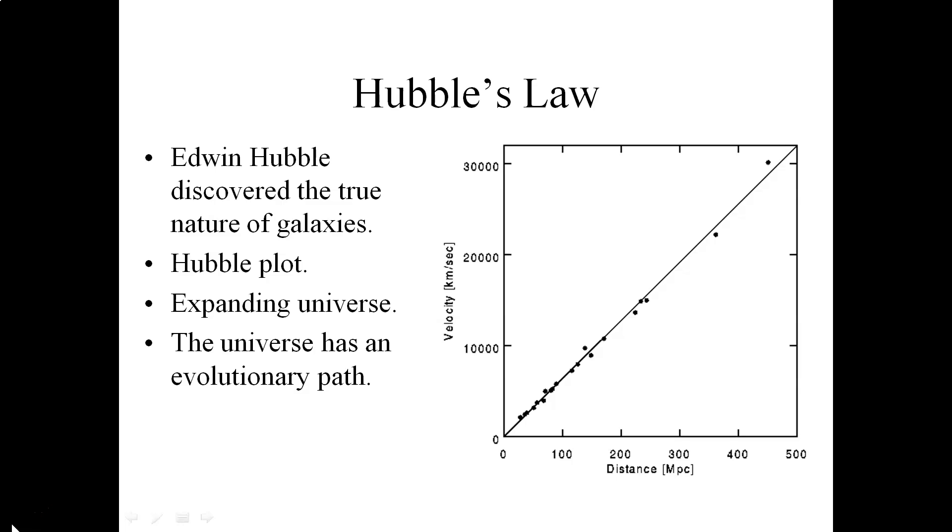And our best measurements to date give us the slope of this line as a value of 72 kilometers per second per megaparsec. That corresponds to an age of the universe of about 13.8 billion years. So Hubble's law implies that the universe is expanding, as was originally predicted by the Einstein field equation in general relativity. And it also implies that the universe is of finite age.